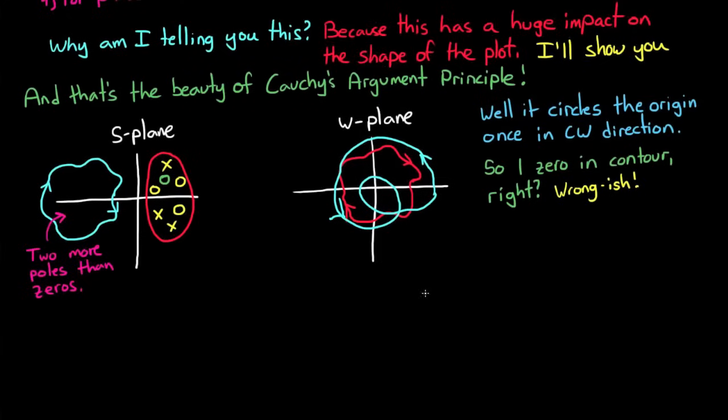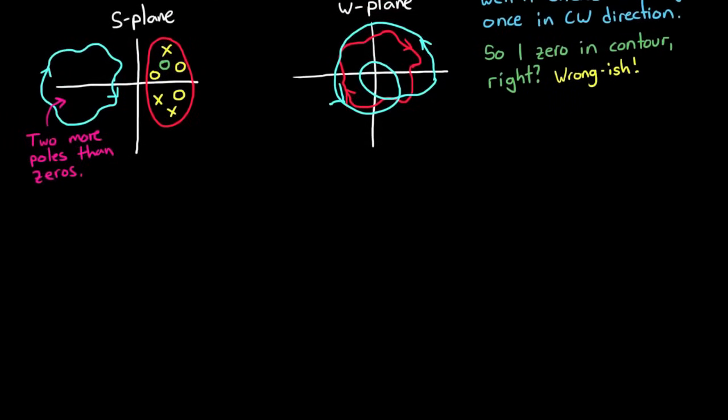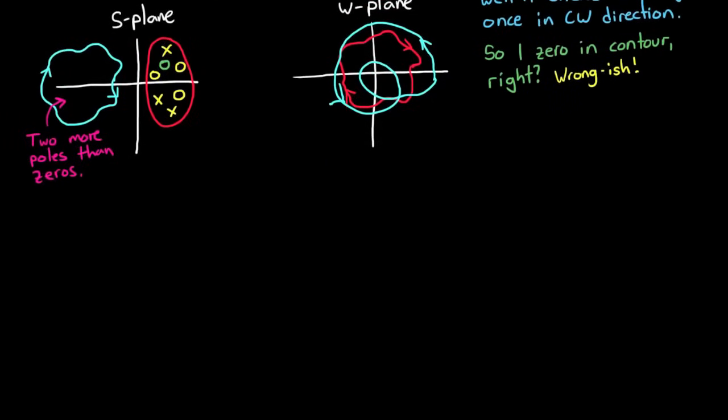In order to figure out how this information helps us, let's get back to our problem. We're trying to figure out if there are any zeros in the right half plane for 1 plus GH. Because if there are, that means that the closed-loop system is unstable. And now we know how to use Cauchy's argument principle to determine if there are any zeros inside of a contour.